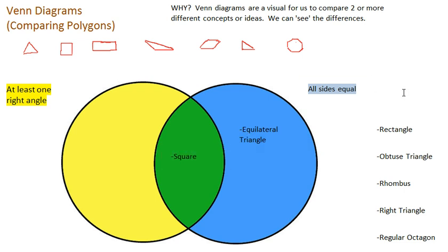The rectangle has at least one right angle, it has four, and all sides are not equal—these two are longer. So I'm going to place it in, well, all sides are not equal, not both, but has at least one right angle, so there.